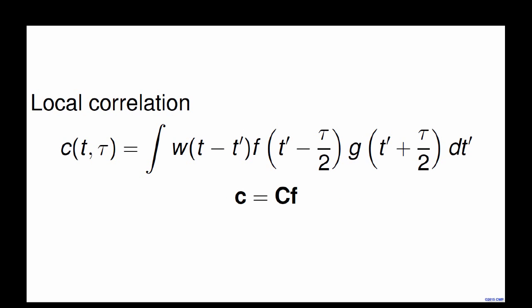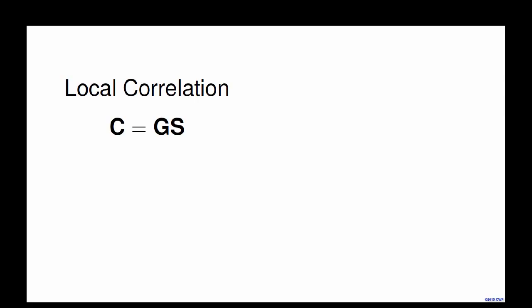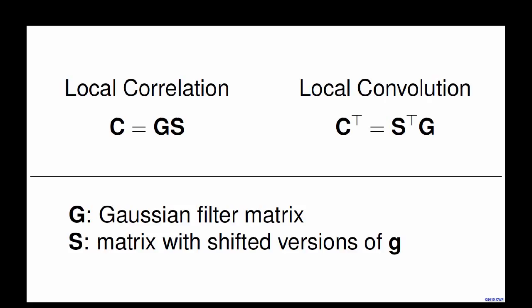The local correlation is also a linear operator, and we use the same capital C. If we let the window go to infinity, the local correlation converges to a global correlation, which becomes time invariant. The local correlation consists of two steps: first, a shifting operator computing the product between shifted versions of F and G, then a convolution with the Gaussian window. Since this Gaussian window is SPD, when we compute the adjoint operator we first apply the Gaussian convolution, followed by the transpose of the shifting operator. Once we have this forward and adjoint pair defined, we use it for the tomographic problem.